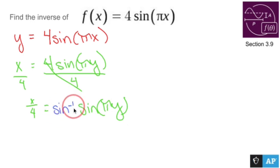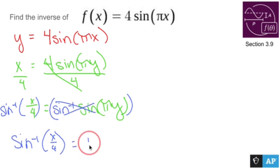I have to inverse sine both sides to get rid of the sine on the right. So if I inverse sine both sides, now I have sin^(-1)(x/4) equals, these guys cancel each other out, πy.